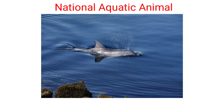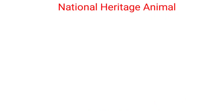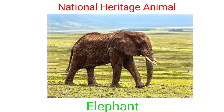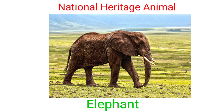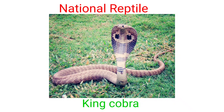National Aquatic Animal - River Dolphin. River Dolphin is our National Aquatic Animal. National Heritage Animal - King Cobra. King Cobra is our National Reptile.